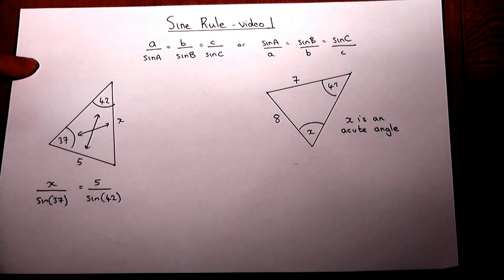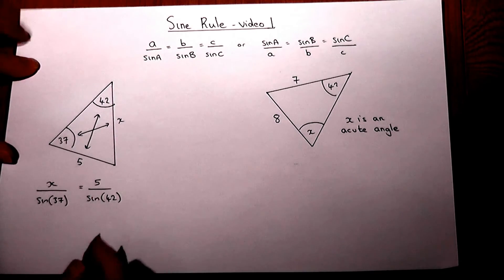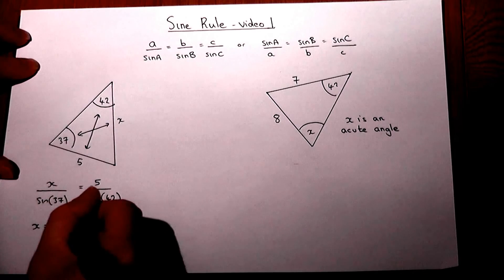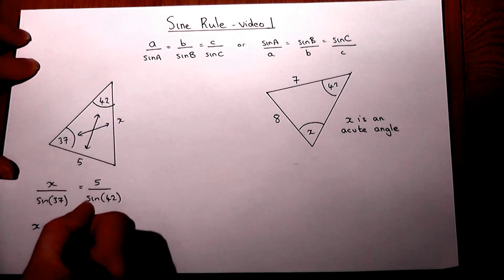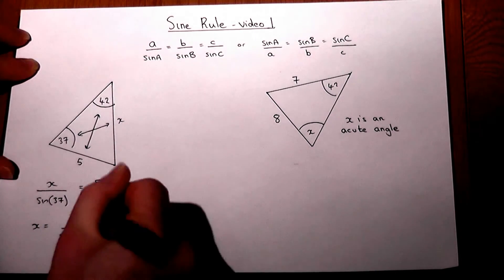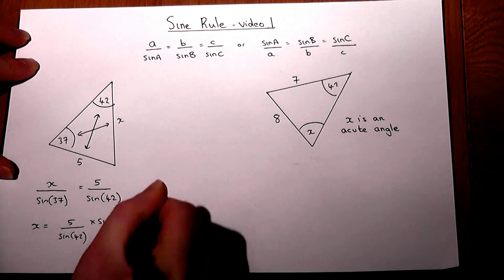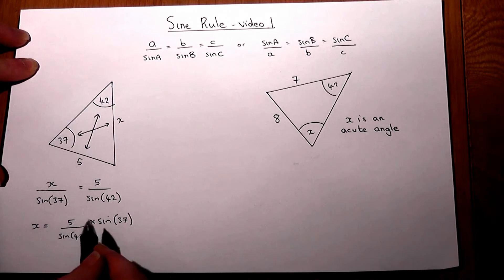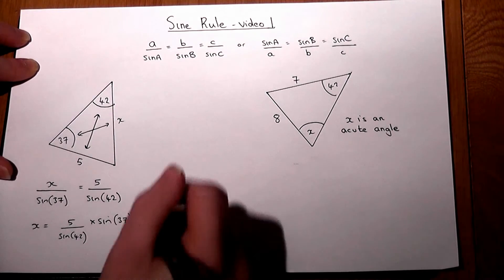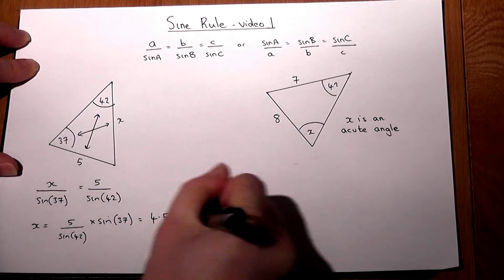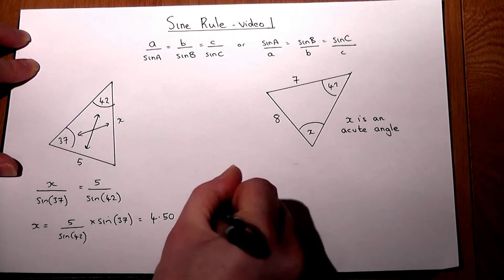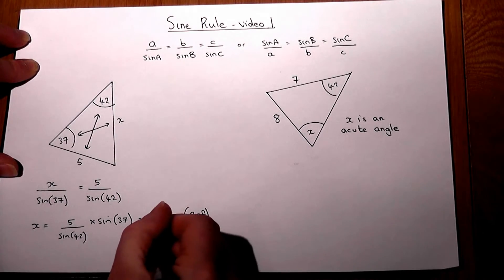If we multiply through by sine 37, then X will equal 5 over sine 42 times by sine of 37. If you enter this into your calculator, you get X is 4.50 to 3 significant figures.